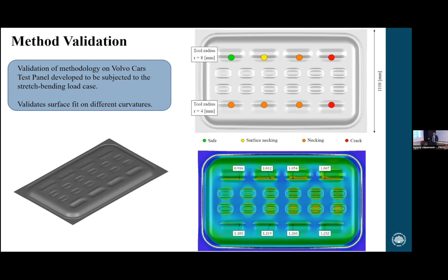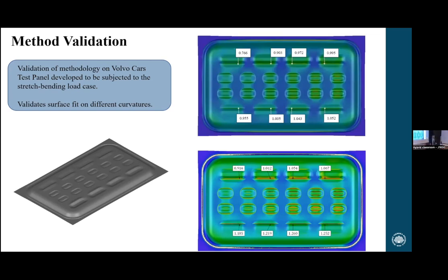Comparing the bending corrected approach to the standard tools available — specifically the non-linear forming limit diagram in AutoForm based on the GFLC approach developed by Volk of Munich — we see that the standard approach doesn't predict failure until the very last section, which is far too late and unable to accurately predict the earlier failing areas. What should be mentioned is that the implemented forming limit diagram in AutoForm always evaluates at the mid-surface of the shell element, meaning it doesn't account for the strain gradient through the thickness of the sheet.